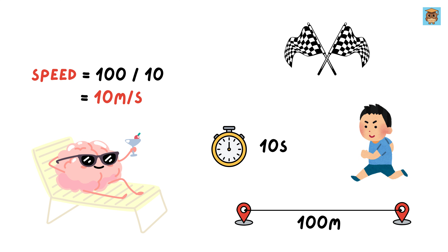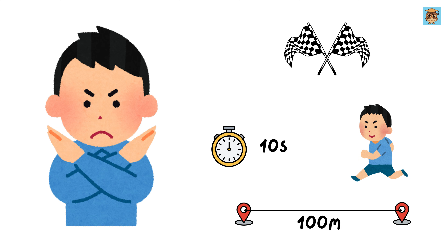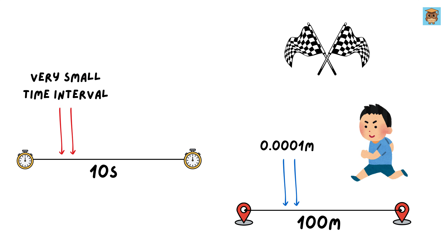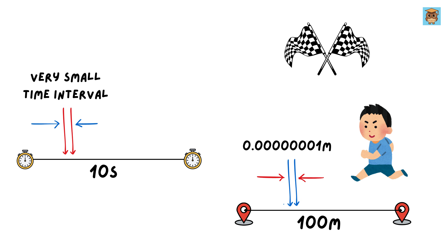But now, what if we focus not on the entire race, but on a tiny segment of it? Suppose we look at a shorter and shorter distance — say 0.0001 meters. The time interval shrinks along with the distance. As both the distance and the time get smaller and smaller, what happens to the runner's speed?